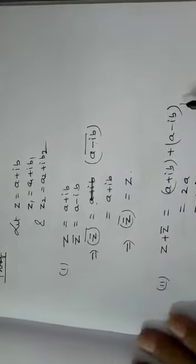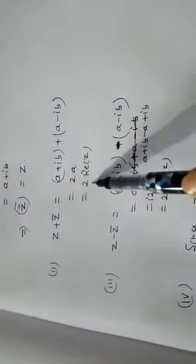For z plus z bar: z plus z bar equals (a plus ib) plus (a minus ib), which is twice a — that is, twice the real part of z. Similarly, z minus z bar equals twice i times b, which is twice the imaginary part of z. Since z equals z bar, we observe that the imaginary part of z is equal to zero, meaning the complex number is purely real.